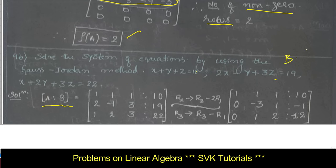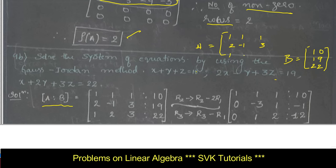B is the column matrix 10, 19, and 22. Matrix A is the coefficients of x, y, z. From the first equation, the coefficients of x, y, z are 1, 1, 1. From the second equation: 2, -1, 3. From the third equation: 1, 2, 3. This is matrix A. Combining A and B gives the augmented matrix.